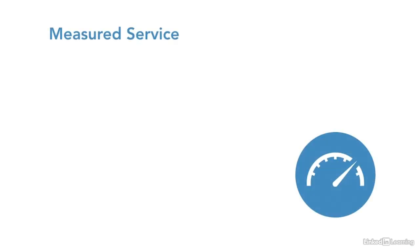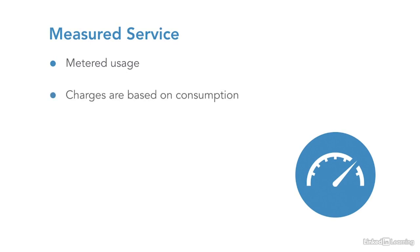Measured service refers to metered usage of cloud services — the same way you incur charges at home based on the amount of electricity or water you use. Charges are based on consumption. This applies to all categories of cloud services, whether you're talking about cloud storage, compute (virtual machines running in the cloud), or network configurations including internet gateways, routing, and firewalls.